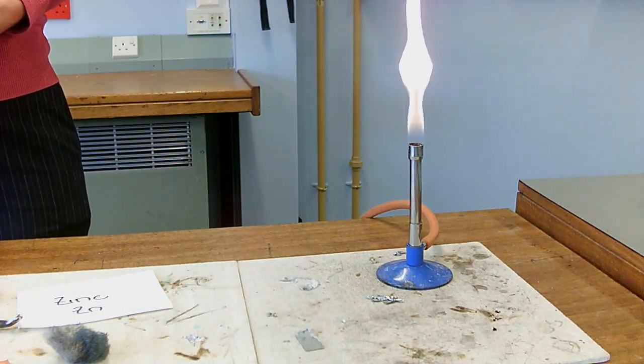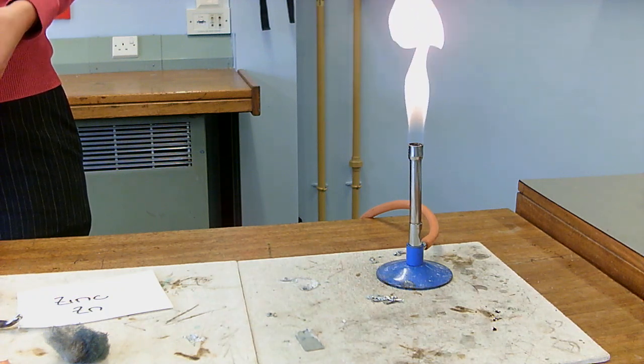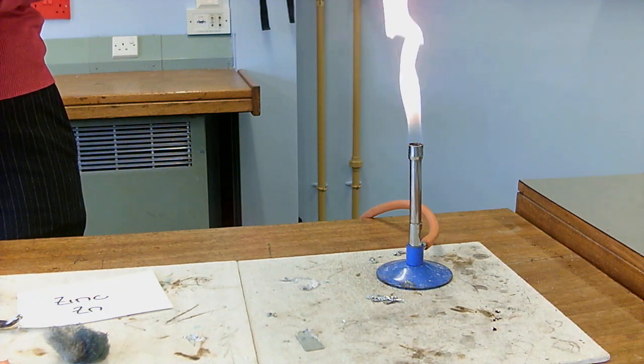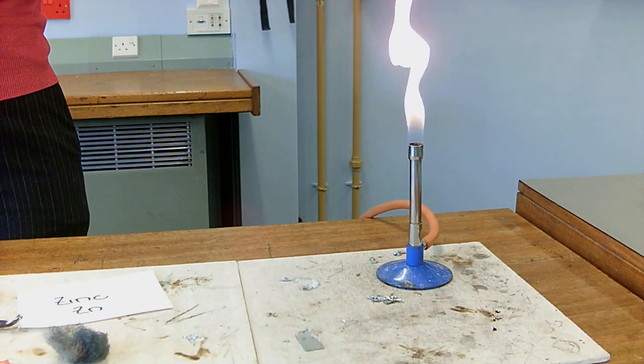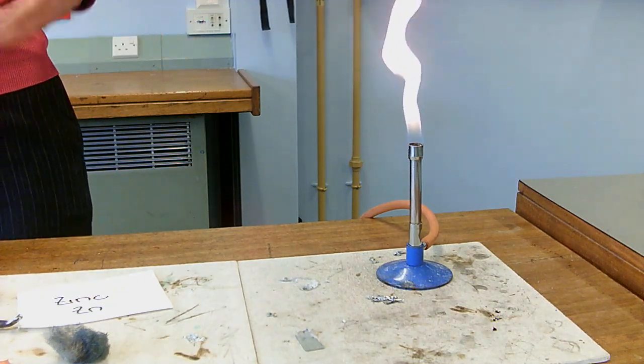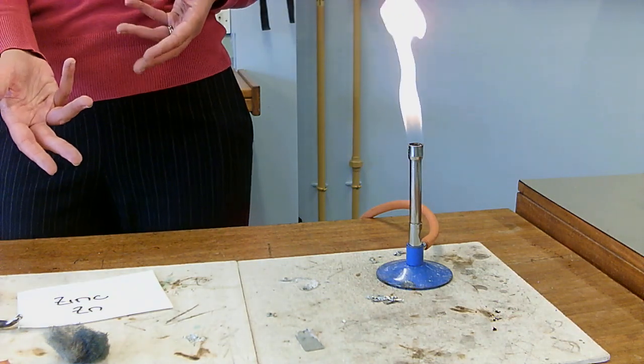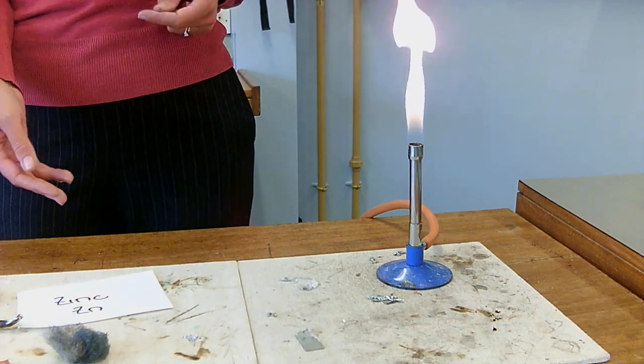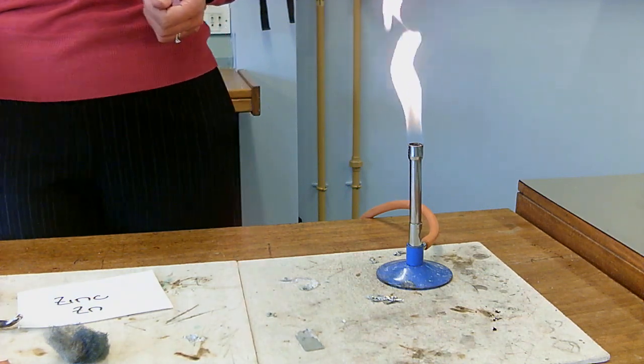So, we started with copper, pretty unreactive, thin layer of oxide on it. Went through iron, had our nice sparkly twinkles. Zinc, much more reactive than the metals we've seen before. Zinc is less reactive than magnesium.